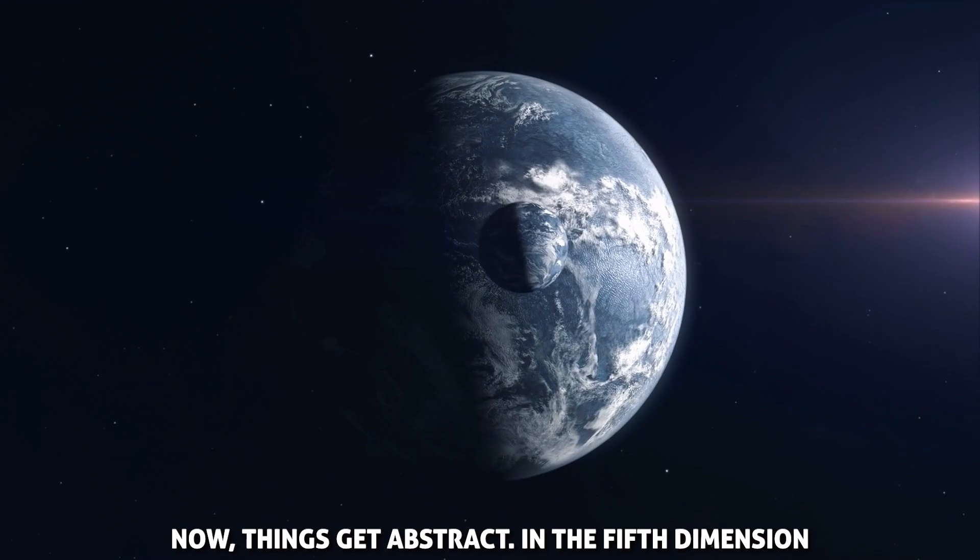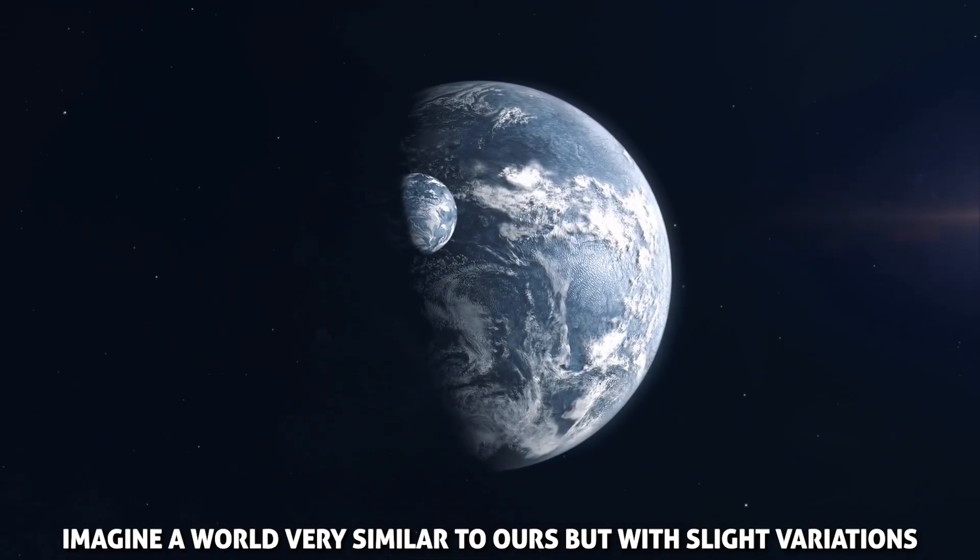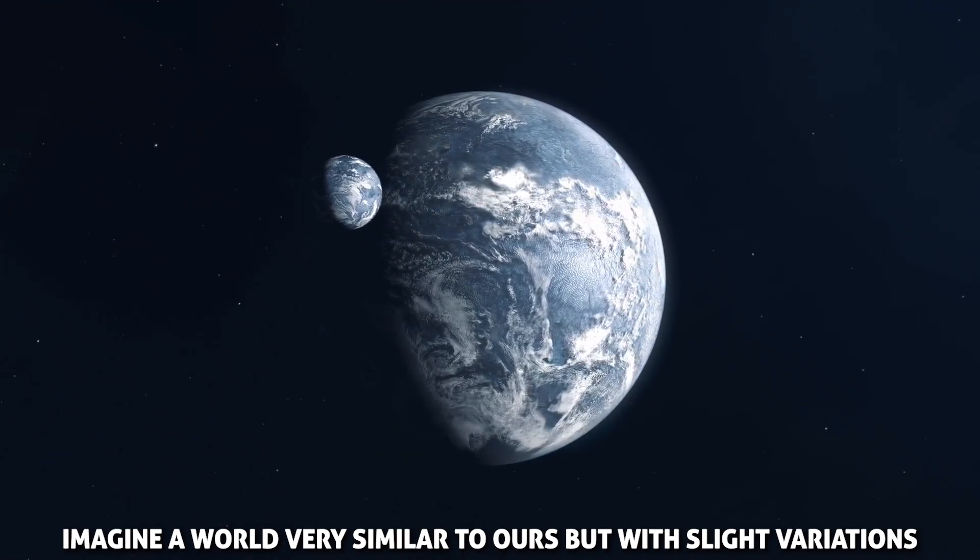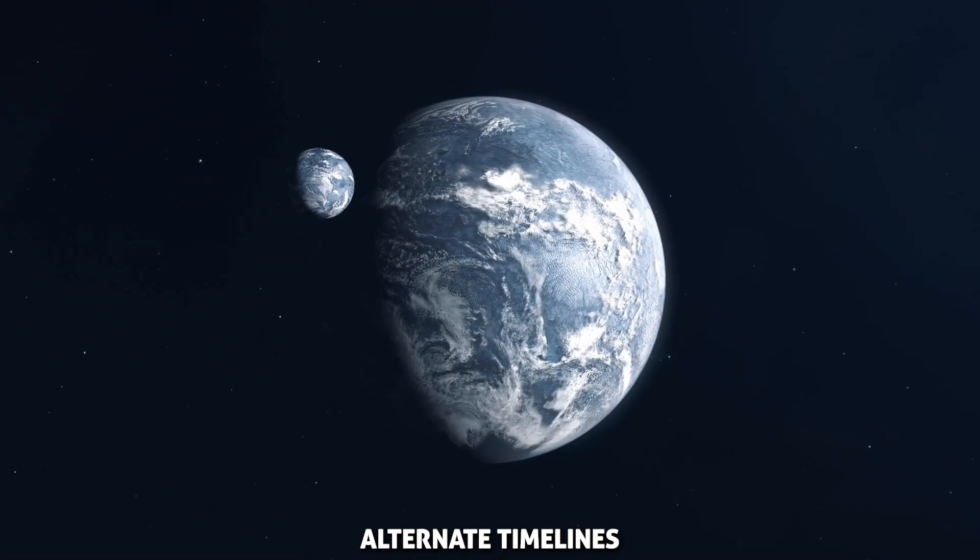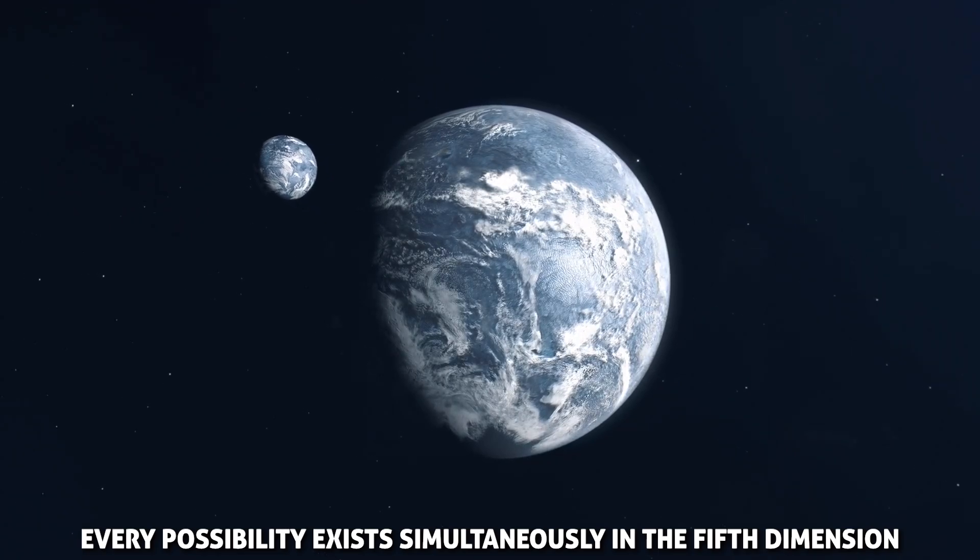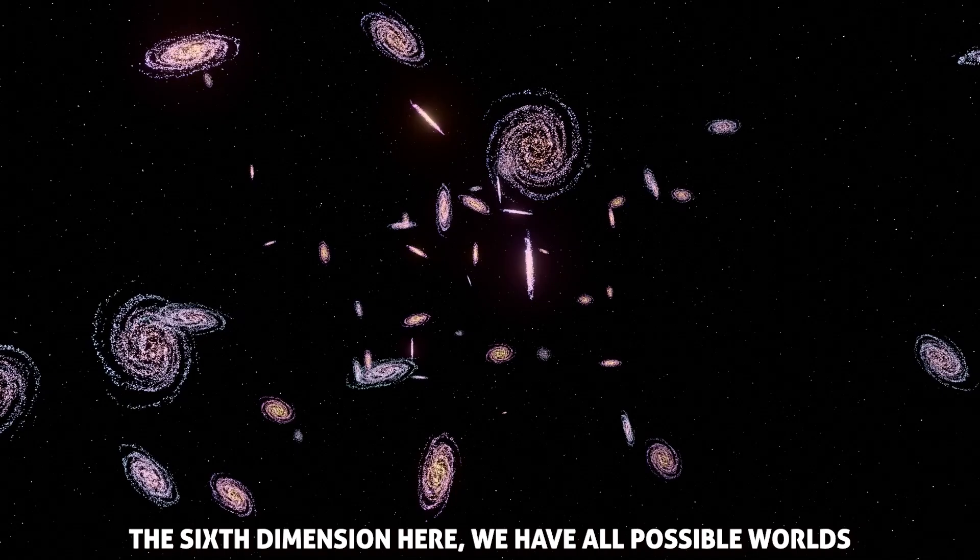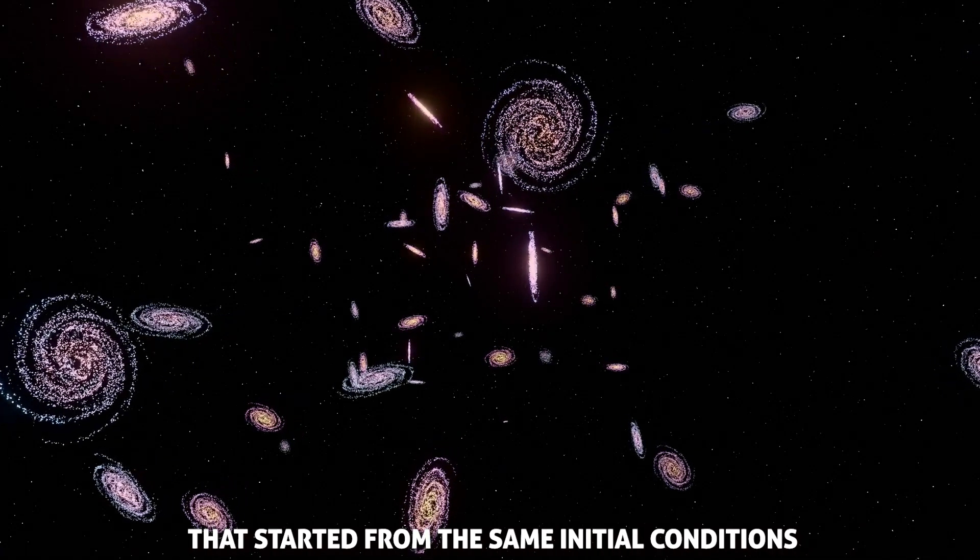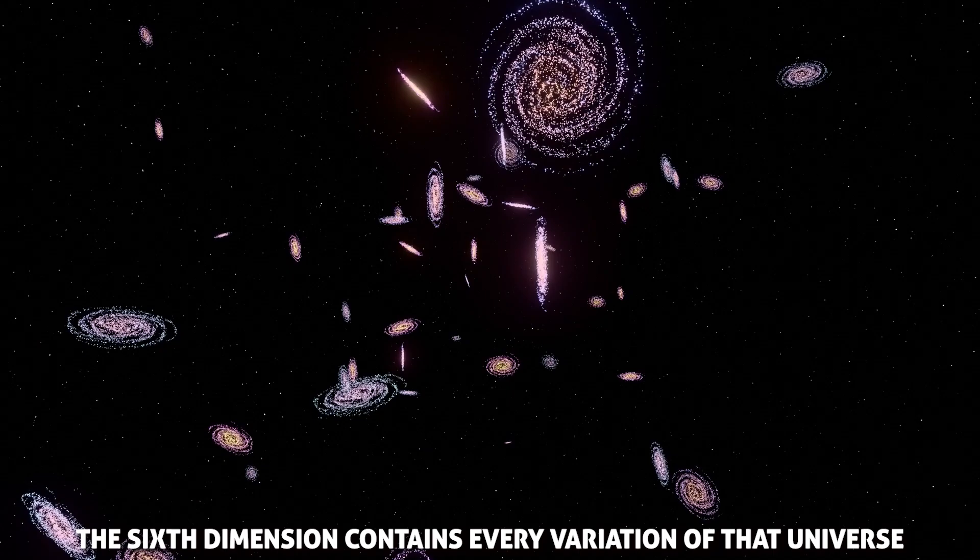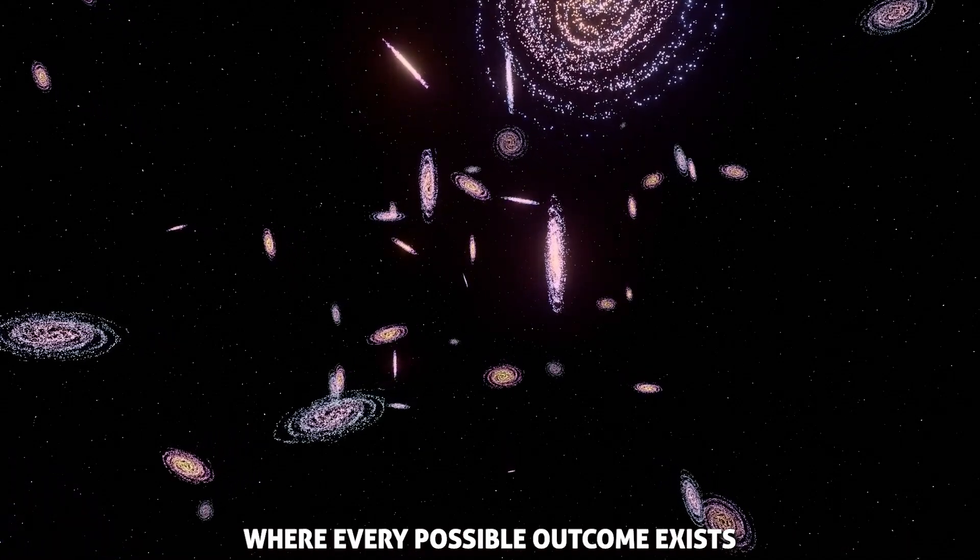Now things get abstract. In the fifth dimension, we begin to see possible worlds. Imagine a world very similar to ours, but with slight variations, alternate timelines. Every possibility exists simultaneously in the fifth dimension. The sixth dimension. Here, we have all possible worlds that started from the same initial conditions. If the universe began with the Big Bang, the sixth dimension contains every variation of that universe, where every possible outcome exists.